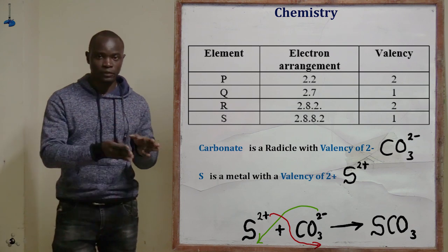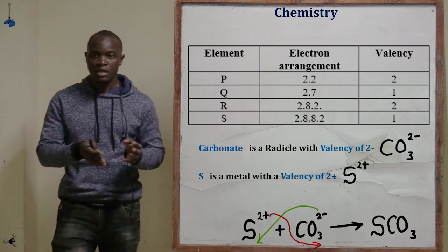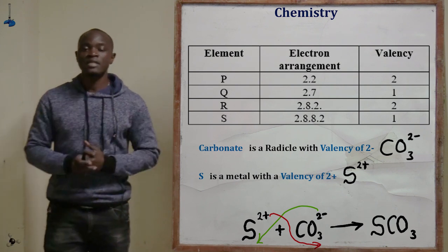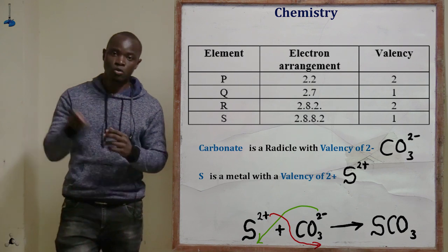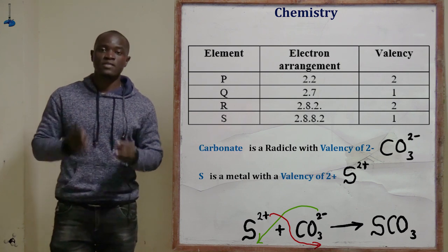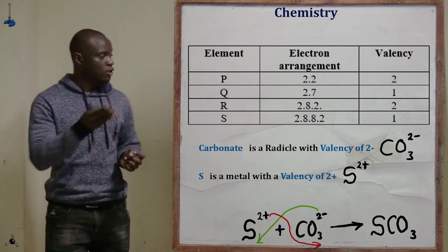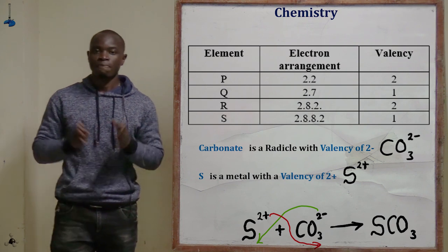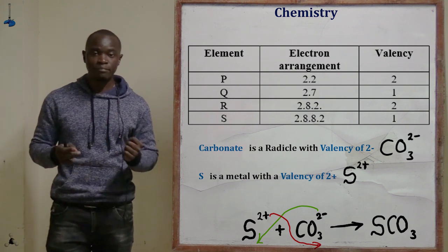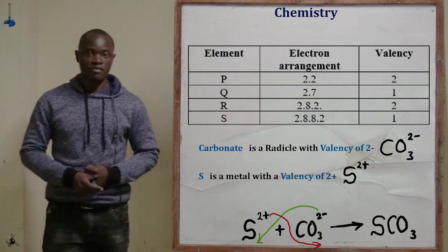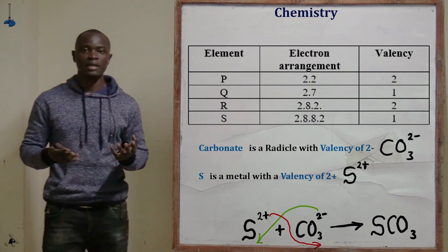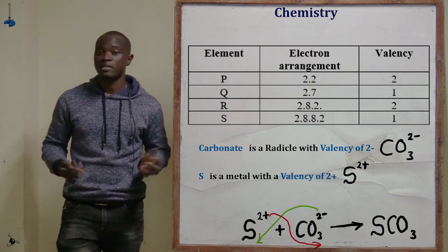Since S has a valency of 2 positive and carbonate has a valency of 2 negative, when we react them the valencies interchange — and since both valencies are 2, they cancel out. The final formula is SCO₃. Knowing the valencies of elements makes it very easy to determine how they react and what products they form.